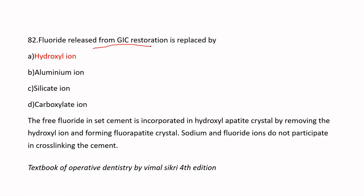The fluoride released from a GIC restoration is replaced by hydroxyl ions. Free fluoride in the cement is incorporated into hydroxyapatite crystals by displacing hydroxyl ions, forming fluorapatite crystals. The fluoride does not participate in cross-linking of the cement, so hydroxyl ions replace fluoride in the GIC restoration.